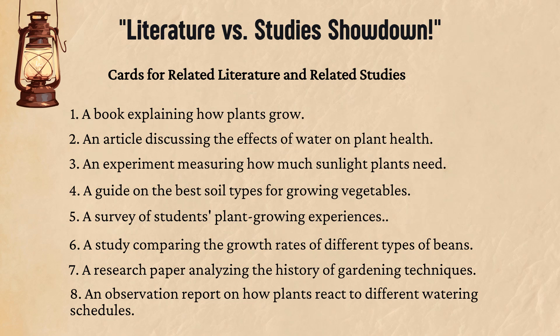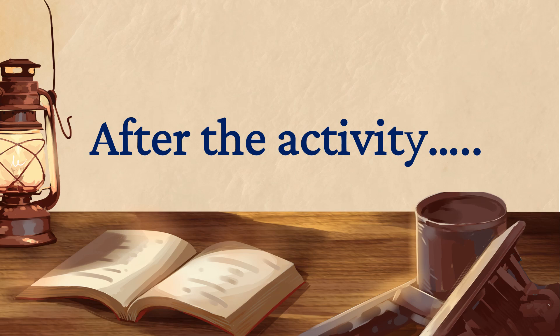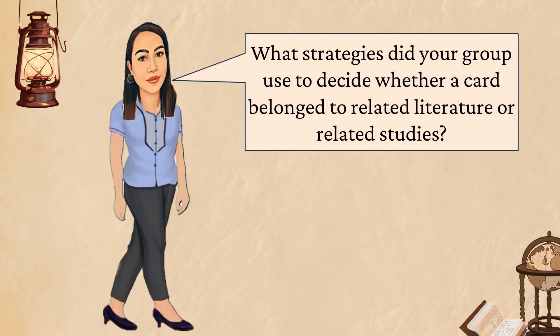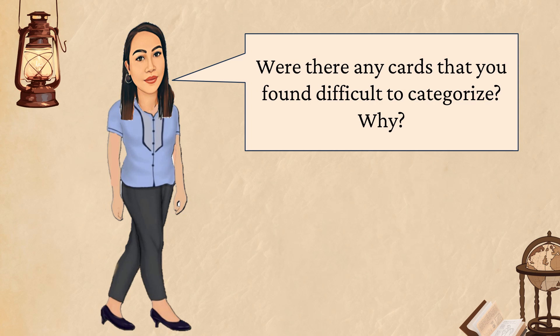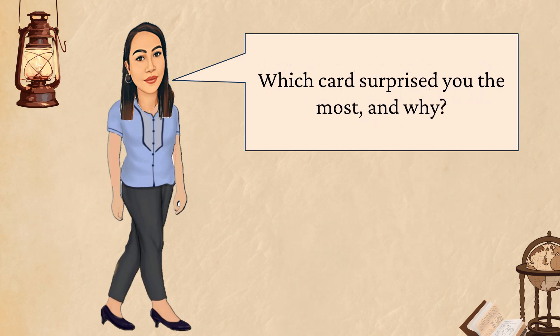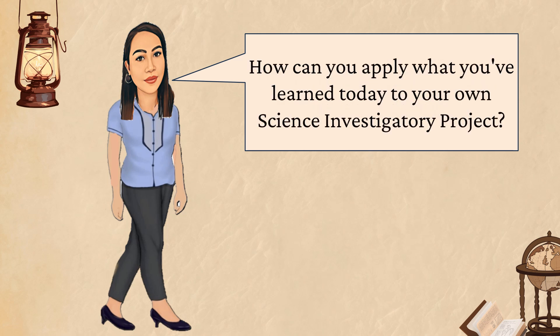Here's the content of the cards for related literature and related studies. Reflection questions: What strategies did your group use to decide whether a card belonged to related literature or related studies? Were there any cards that you found difficult to categorize, and why? Which card surprised you the most and why? How can you apply what you've learned today to your own science investigatory project?